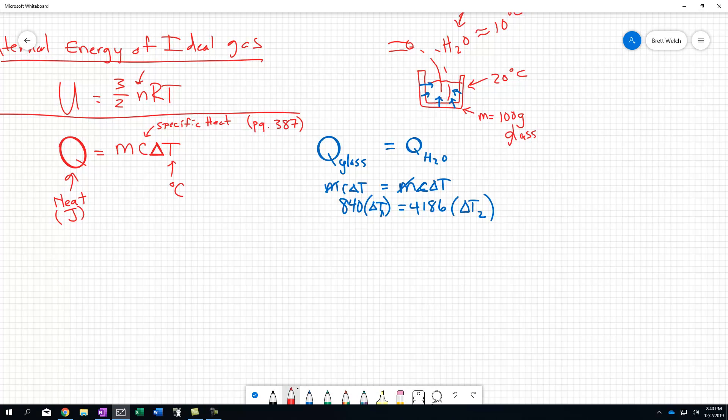If we look at it from the perspective that one started at 20 degrees and one started at 10 degrees, the way we would look at this would be 840 times T nu minus its original temperature. The glass's original temperature was 20. This is going to be off a sign, it's going to be negative, but we'll deal with that. Equals 4186 times that same temperature. This is a critical thing. They're both going to end up at the same temperature, minus 10.